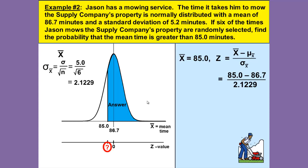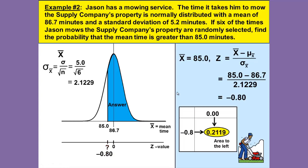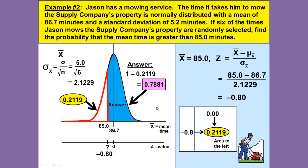The only difference from Example 1 is that we've adjusted the standard deviation because we're dealing with a group. When we calculate that, our z-score turns out to be negative 0.80. We look that up in the table, which gives the area to the left. Since we shaded to the right, we take 1 minus the table value: 1 minus 0.2119, which gives us 0.7881 as our answer.